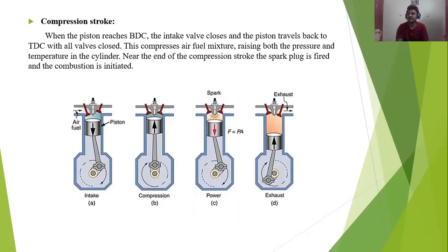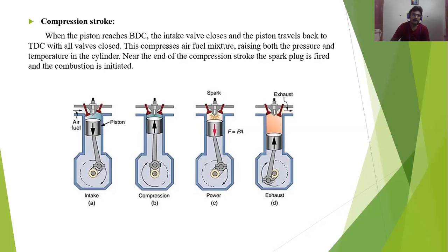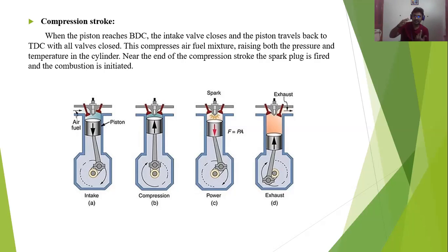The second stroke is the compression stroke — only compression happens. The piston starts moving from bottom dead center to top dead center. Above the piston, the entire area has the air-fuel mixture. As the piston moves up it compresses the complete air-fuel mixture. When the piston reaches the top dead center, the large amount of air-fuel mixture is highly compressed into a small gap, producing high pressure. At that point the spark plug produces a spark and the next stroke begins.